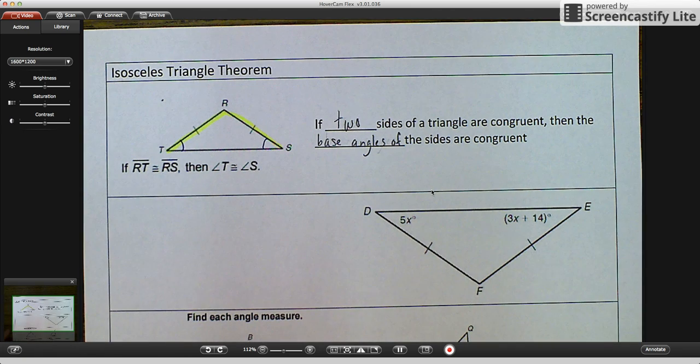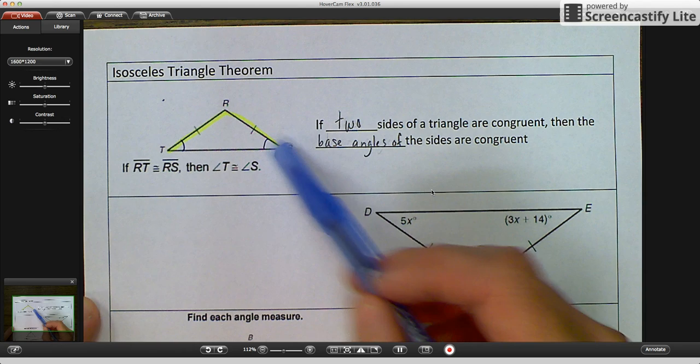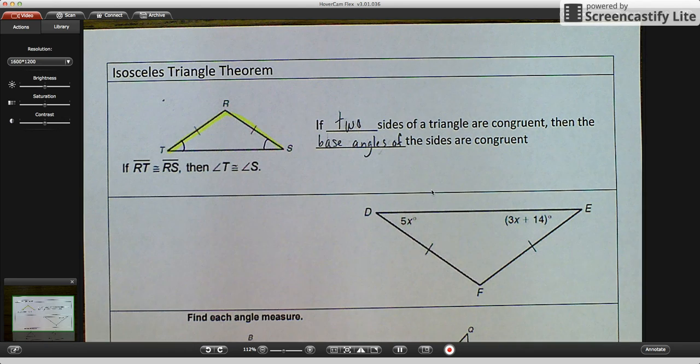Okay, so angle T is a base angle of TR. Angle S is a base angle of SR. Okay, and those would be congruent. So let's look at the first example.